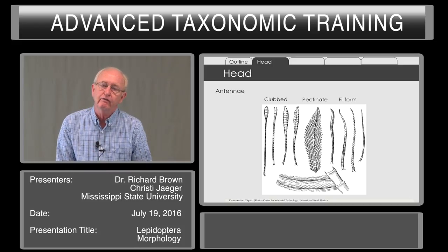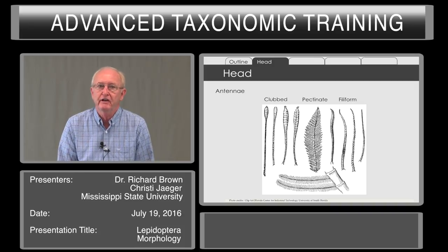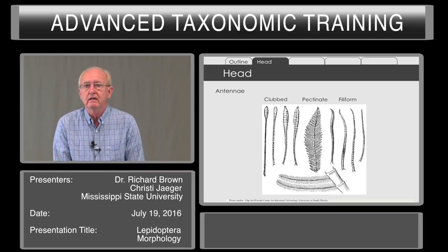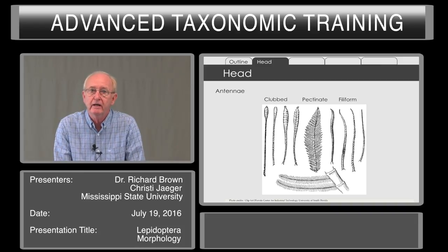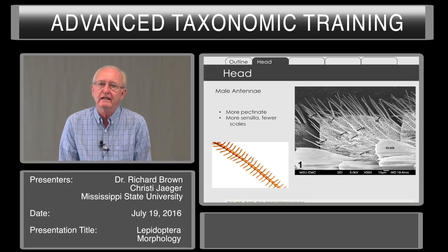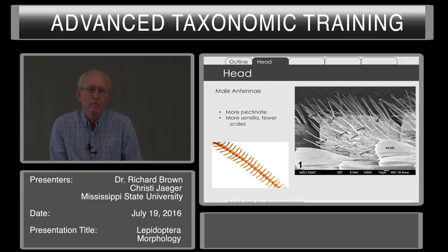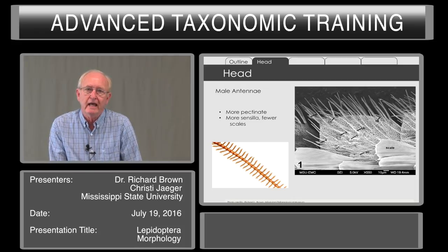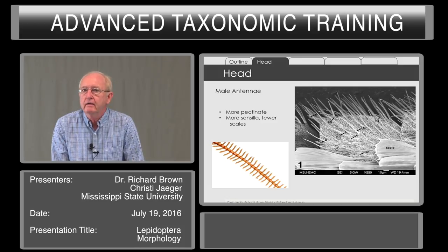Antennae come in a variety of forms — from the clubbed, as we have in butterflies, to pectinate, or sometimes called feathery, to filiform. The pectinate antennae can have one branch per segment, or two, in which we refer to it as bipectinate. The male of the Lepidoptera has more sensilla. Generally, if you look at an individual segment of the antennae as shown in the scanning electron micrograph, you see almost half of it is covered by sensilla. There are eight different types, and some of them are gustatory and some are olfactory, so a lot of different functions are served by these sensilla on the antennae.